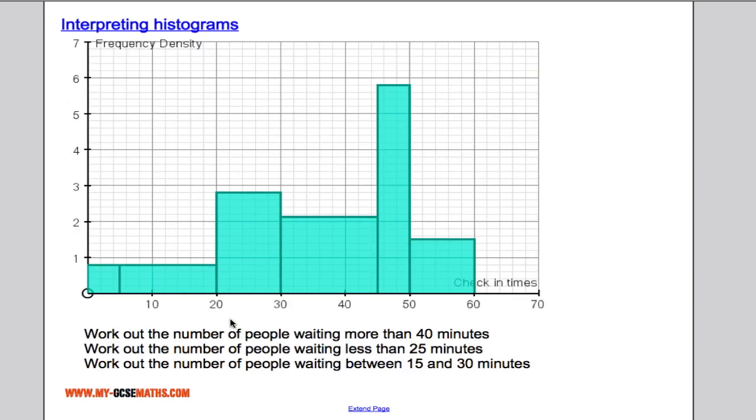So here we have a histogram and it's the check in times at an airport. So I'm asked to work out the number of people who are waiting more than 40 minutes to check in. So if I come along and draw in a line here I can see I'm interested in all the people that are to the right of 40 minutes. So I want the area of all of this. And like we said before, the area of the bar tells us the frequency.